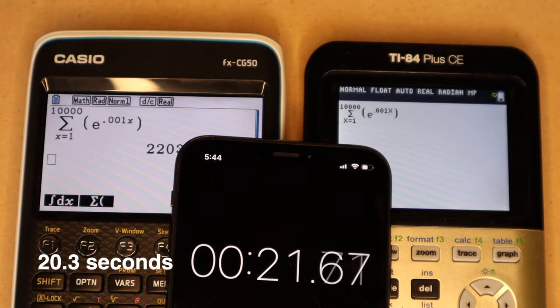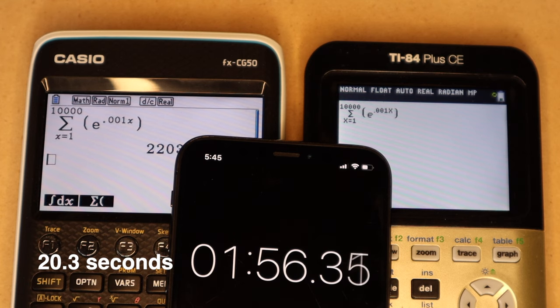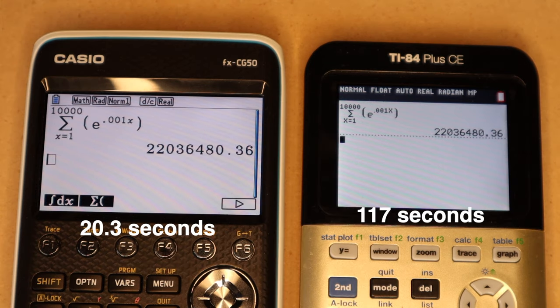So there you can see the Casio spit out the answer relatively quickly, and the TI-84 Plus CE is still plugging away. So there you go. That's a pretty significant time difference. 20 seconds versus almost 120.